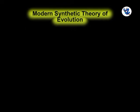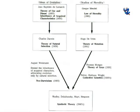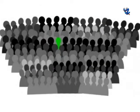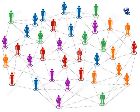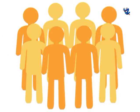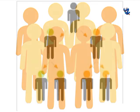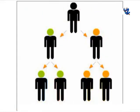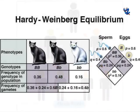Modern synthetic theory of evolution is the theory of organic evolution by natural selection of inherited characteristics, combining Darwin's natural selection theory and Hugo de Vries' mutation theory. A group of similar individuals interbreeding among themselves occupying a geographical area is called a genetic population or Mendelian population. The population is considered as the unit of evolution because new species are evolved from populations and not from a single individual. The sum total of genes of all individuals of an interbreeding population is called the gene pool. The proportion of an allele in the gene pool compared with other alleles at the same locus is the gene frequency.